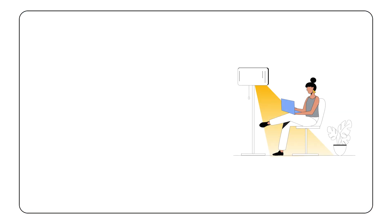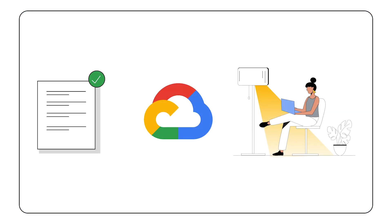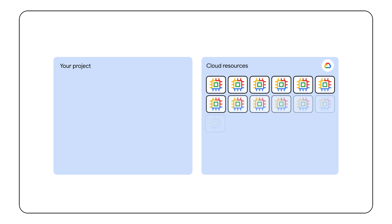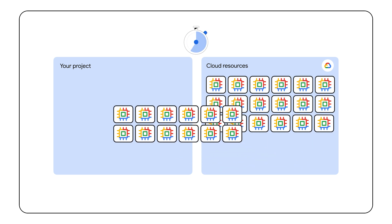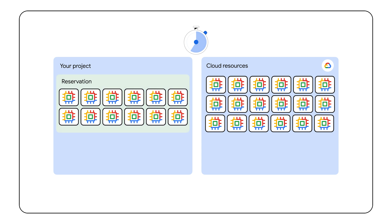When you submit your request for a future reservation, it will be reviewed and accepted if resources are available. And then we wait. Once the specified period starts, the system will create compute reservations in your project matching the accepted request. Your hardware will be tightly packed for the lowest multi-node latency. From this point on, you can use those resources however you like.